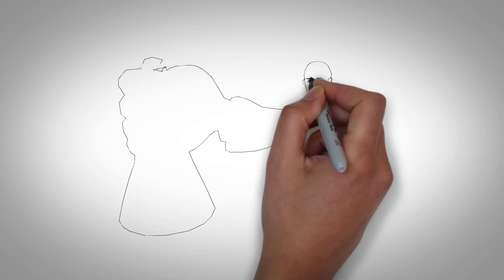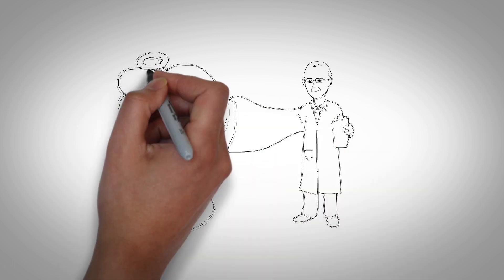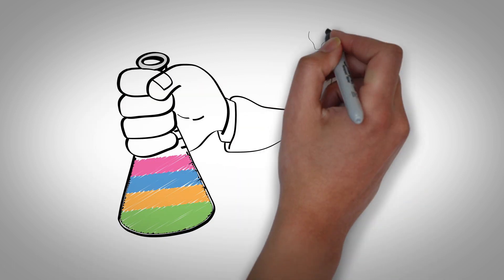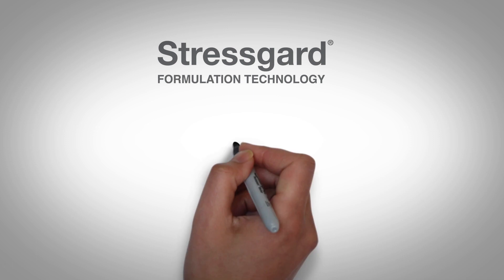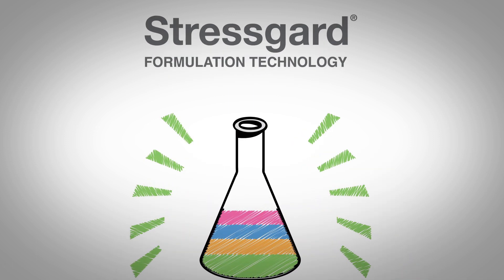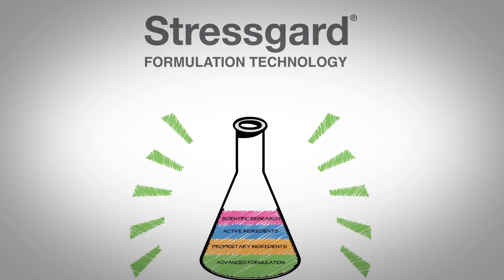About 20 years ago, the scientists at Bayer, with the help of leading university researchers, made a revolutionary discovery that changed the way we manage turf stress today. That turf-specific discovery was StressGard formulation technology.